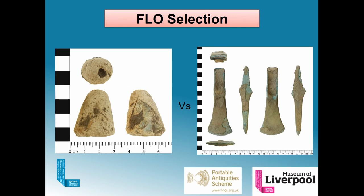FLOs are rather busy, and it's very easy for a big backlog to build up due to the coverage required. So given a lead weight versus a Bronze Age axe, you're probably going to record the axe — but in a few years there might be a major research project on lead weights. We're making decisions about what will be researched in the future. One solution is to limit finds per finder per visit — say 10 finds — and another is to prioritise the local area over finds brought back from a detecting rally in Yorkshire.